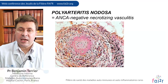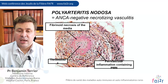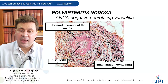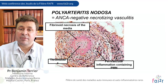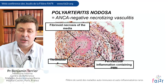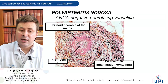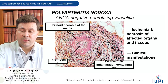PAN is an ANCA-negative necrotizing vasculitis. As you can see, there can be fibrinoid necrosis of the media, which is quite suggestive of necrotizing vasculitis. You can also have thrombosis of the vessel lumen and very important perivascular inflammation, mainly containing polymorphonuclear cells.